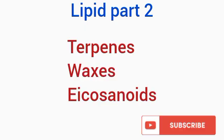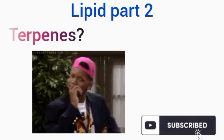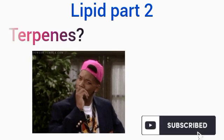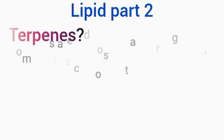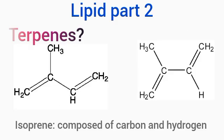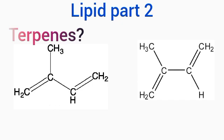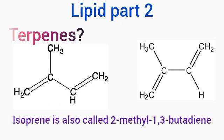So in today's class, we'll be talking about the terpenes, the wax, and the eicosanoids. Terpenes are actually a diverse class of organic compounds composed of isoprene units. Isoprene is a 5-carbon compound, as you can see from the diagram displayed, composed of carbon and hydrogen. Isoprene is also called 2-methyl-1,3-butadiene, indicating that it has 2 double bonds.